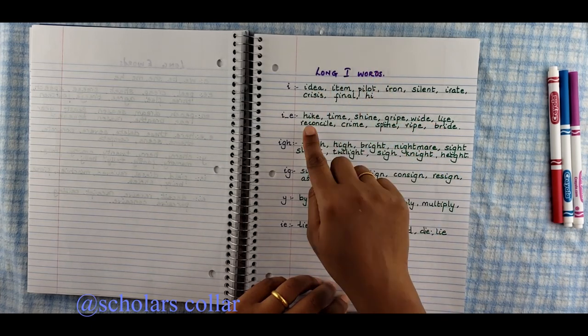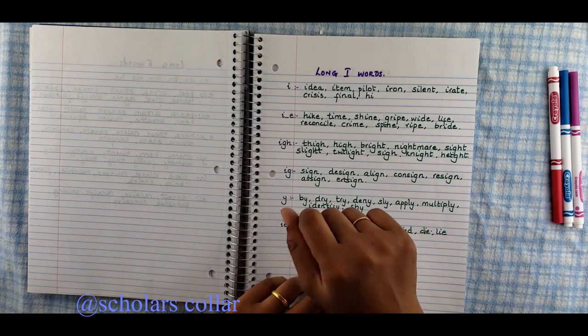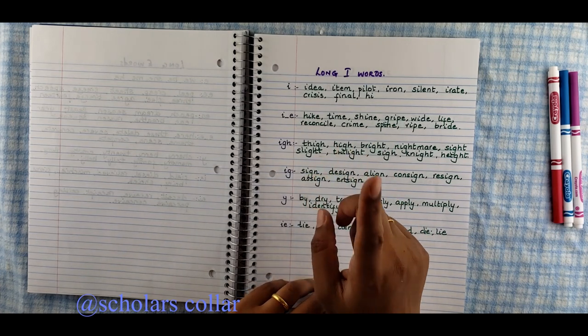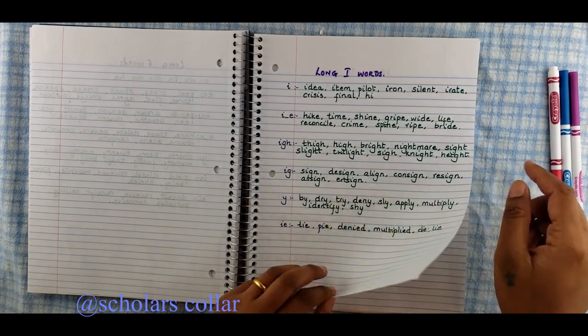I sounds. Again, I, E, I, E here with the split. I, G, H, I, G, H, Y, and I, E. All the words here end in the word I. Same thing with A, E, I, O, U. They all sound one sound. I. Idea. Hike. You hear the I in it. Tie, sign, buy, dry, try. All of them are I.